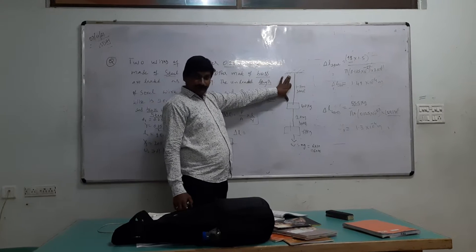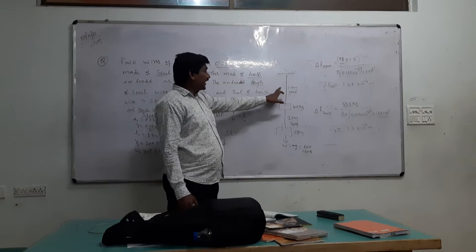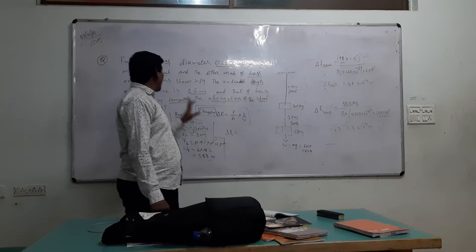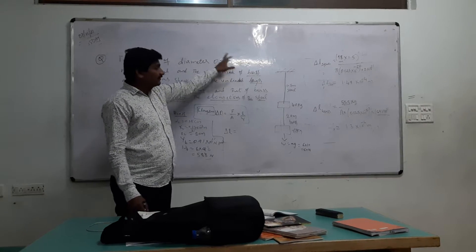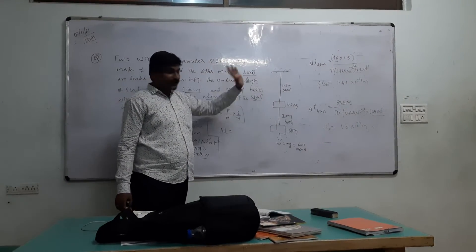So this is what you are seeing here. The steel and brass both have the same diameter, 0.25 cm.